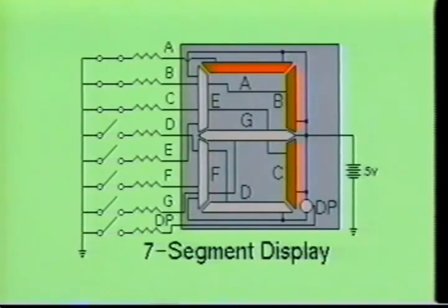Decimal number eight is displayed when all of the segments except DP are activated, and decimal nine is displayed when segments A, B, C, E, and G are energized.